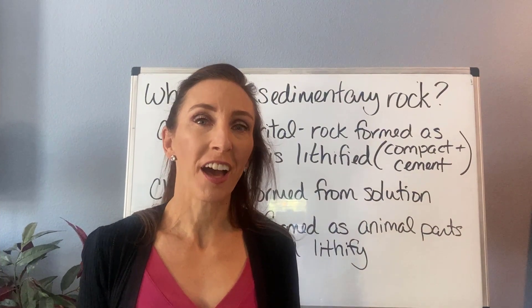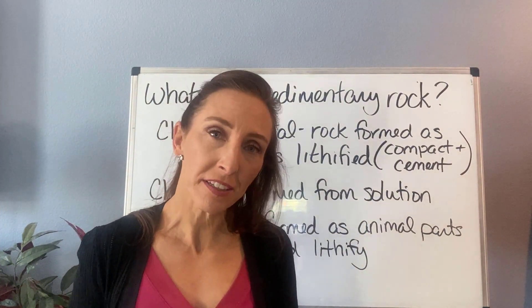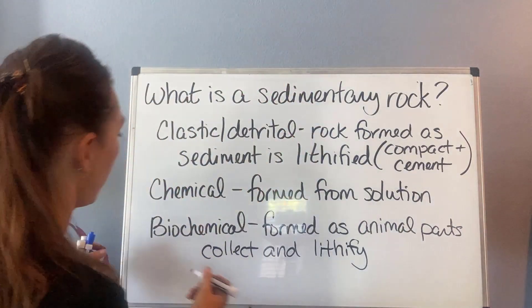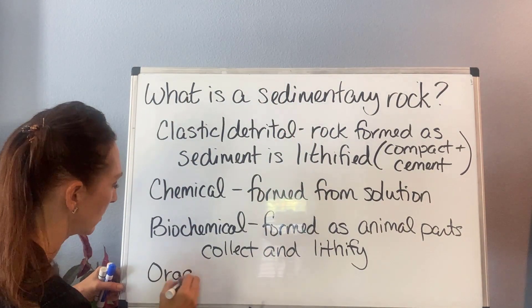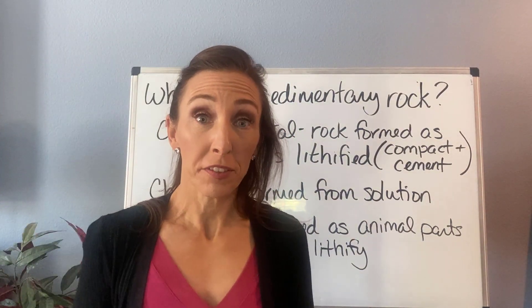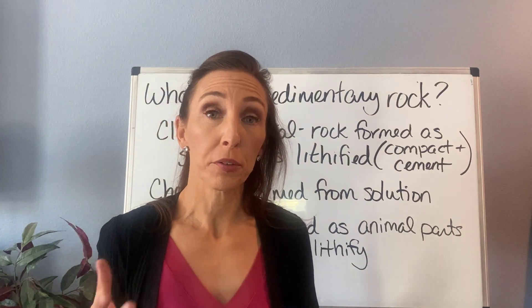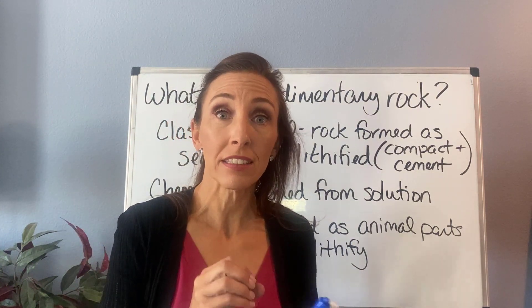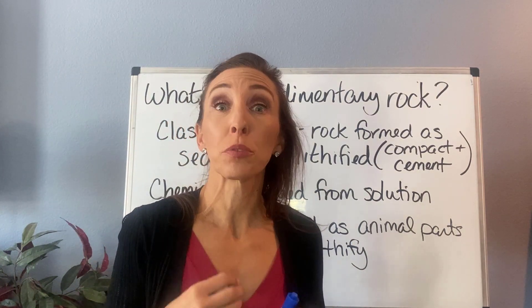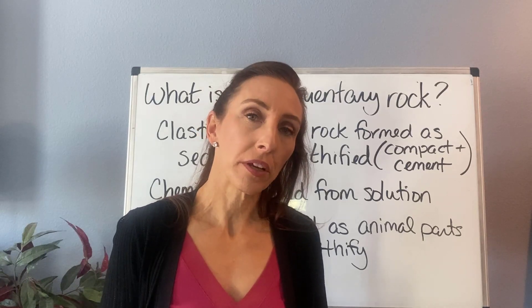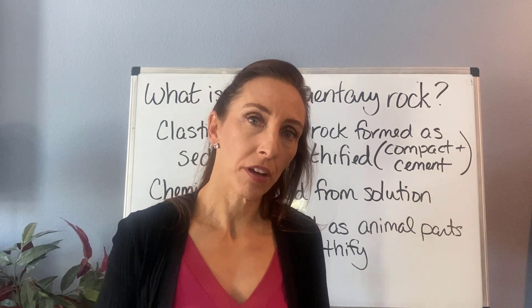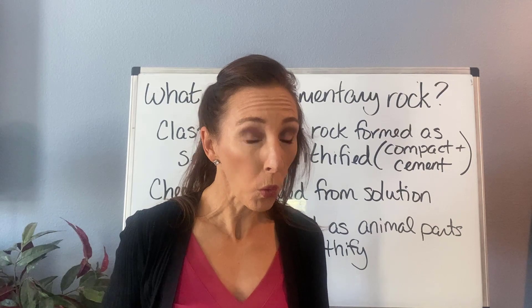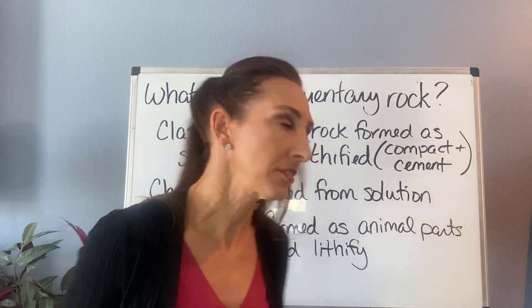There is actually a fourth type: organic sedimentary rocks. These are different from biochemical rocks because, while biochemical rocks come from animal processes, they're not made of actual living material. With organic sedimentary rocks, they form things primarily like coal, which comes from plant materials.